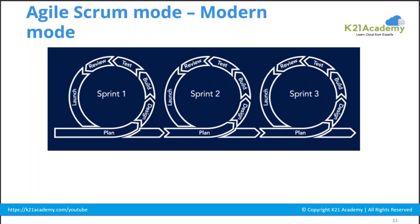Every sprint is two to four weeks, or four to six weeks, depending on the project or client, but not more than six weeks. At the end of every sprint you have something to show the client, called an MVP — minimum viable product. At minimum, a basic result or a dummy web page has to be shown to the client at the end of each sprint.